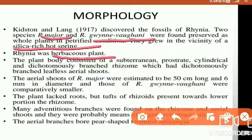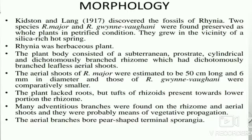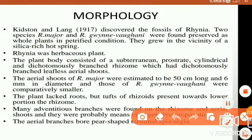The plant body has a cylindrical and dichotomously branched rhizome, and the aerial shoots are also dichotomously branched. The rhizome is dichotomously branched into two branches. The aerial shoots of Rhynia major were estimated to be 50 cm long and 6 mm in diameter, while those of Rhynia gwynne-vaughanii were comparatively smaller.